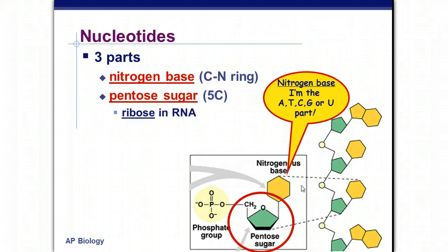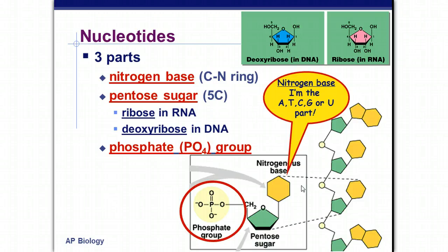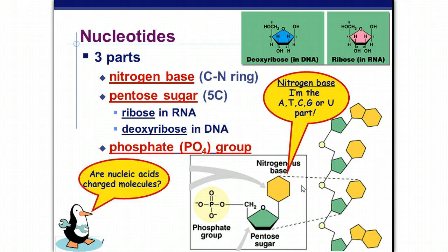In RNA, that's ribose, hence ribonucleic acid. That's how you can remember it. It's right in the name. Deoxyribose is the name of the sugar in DNA, hence deoxyribonucleic acid. It's right there in the name. And then the third part of a nucleotide is the phosphate group. Right there.